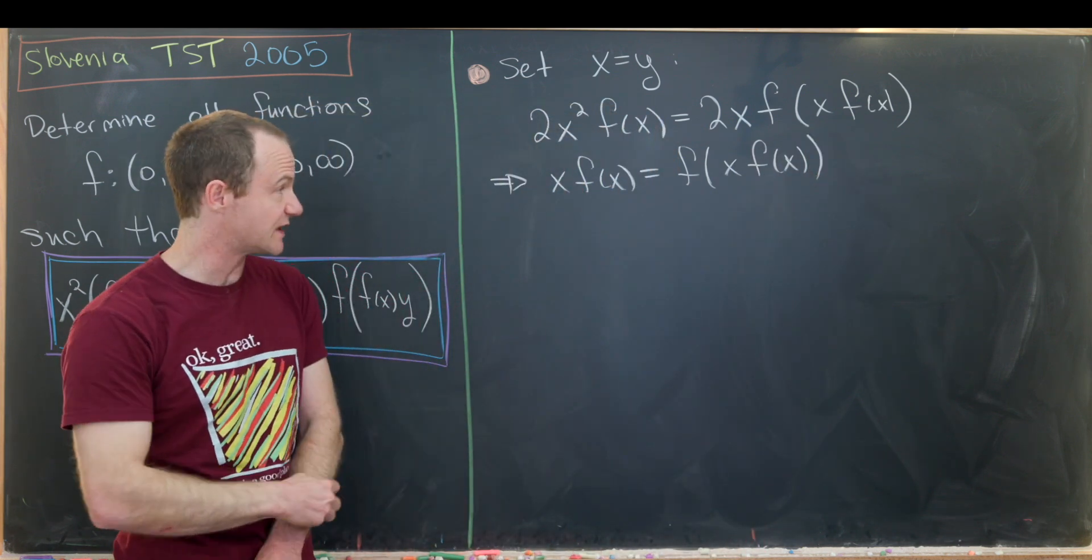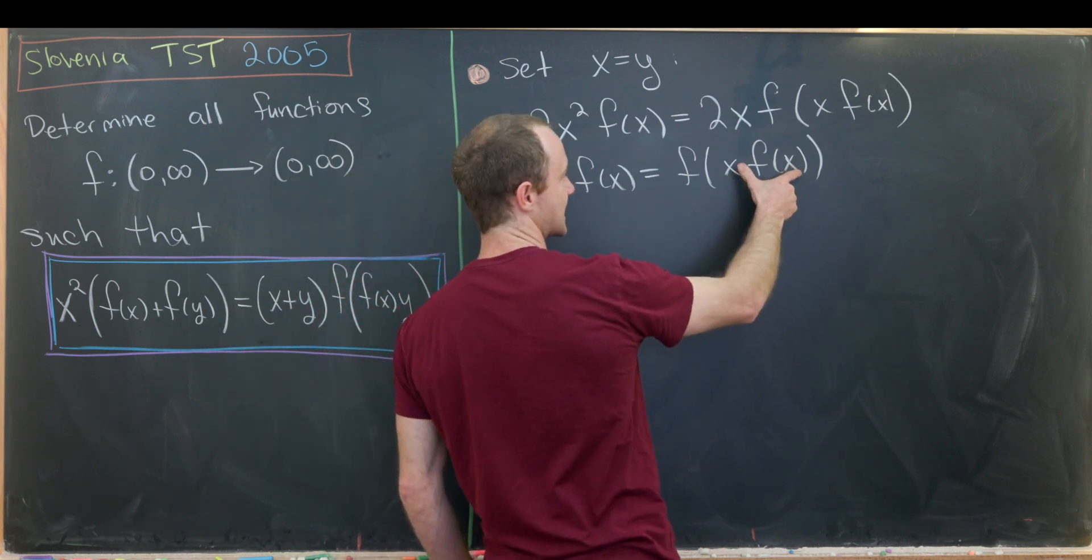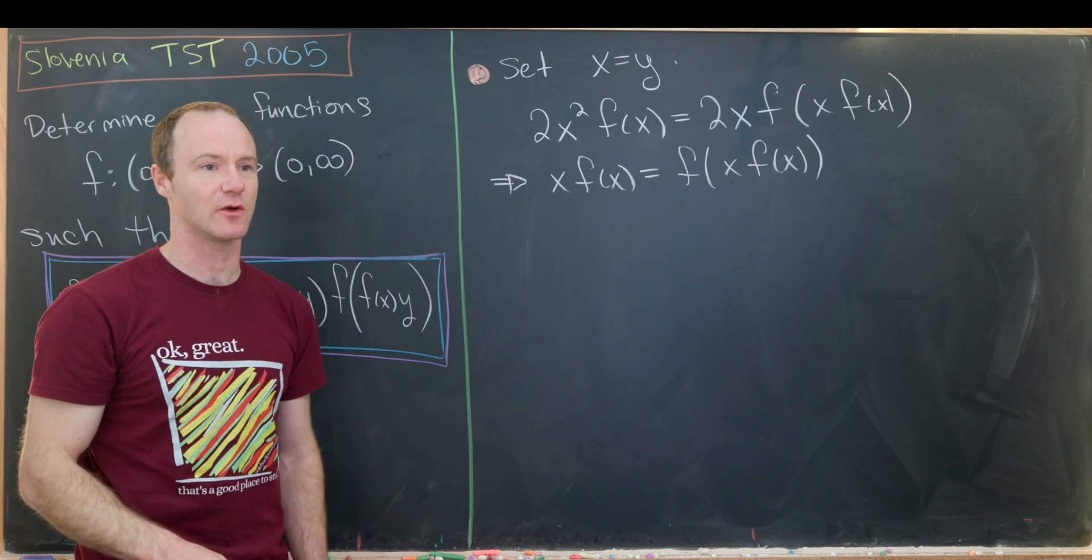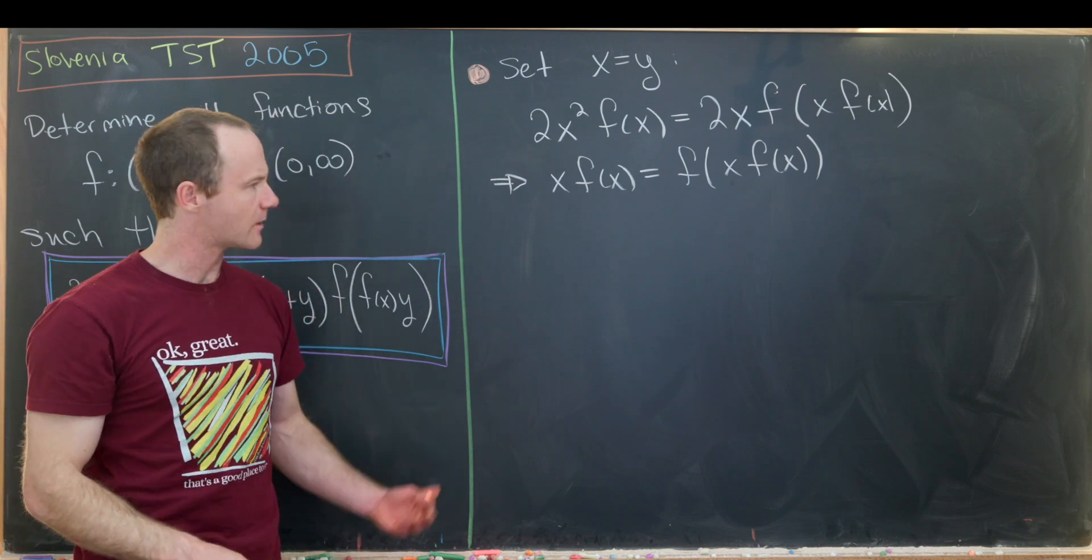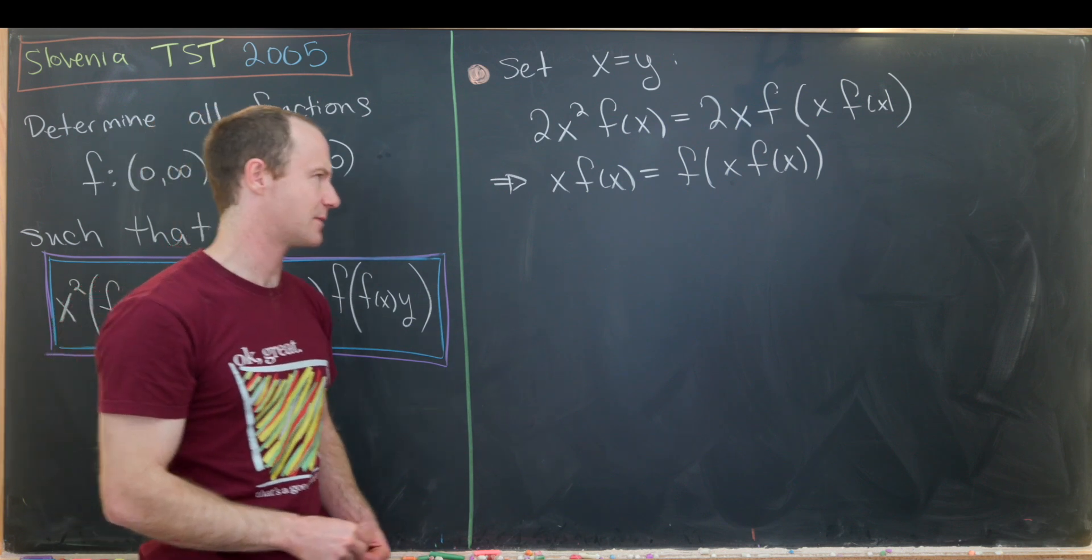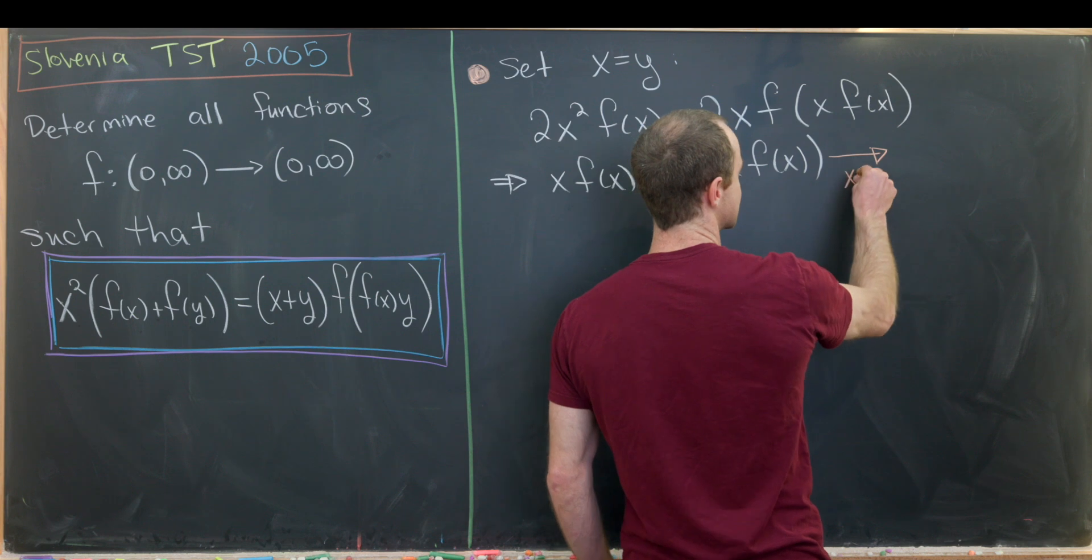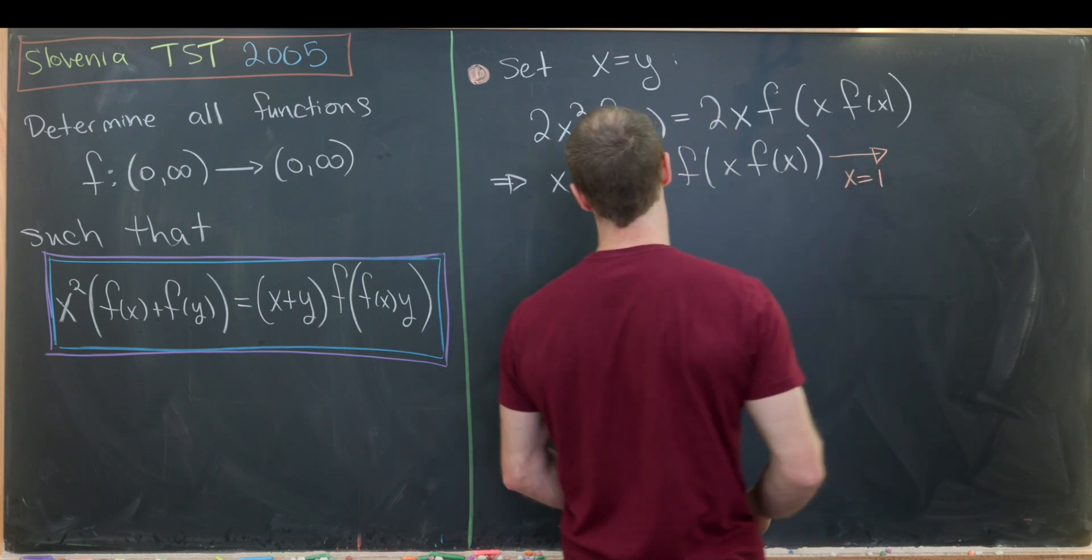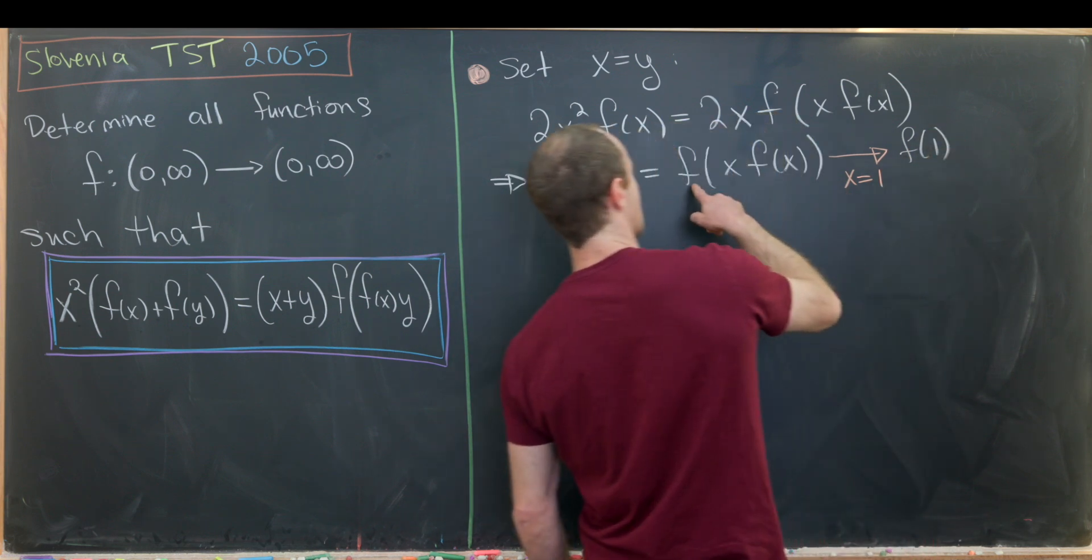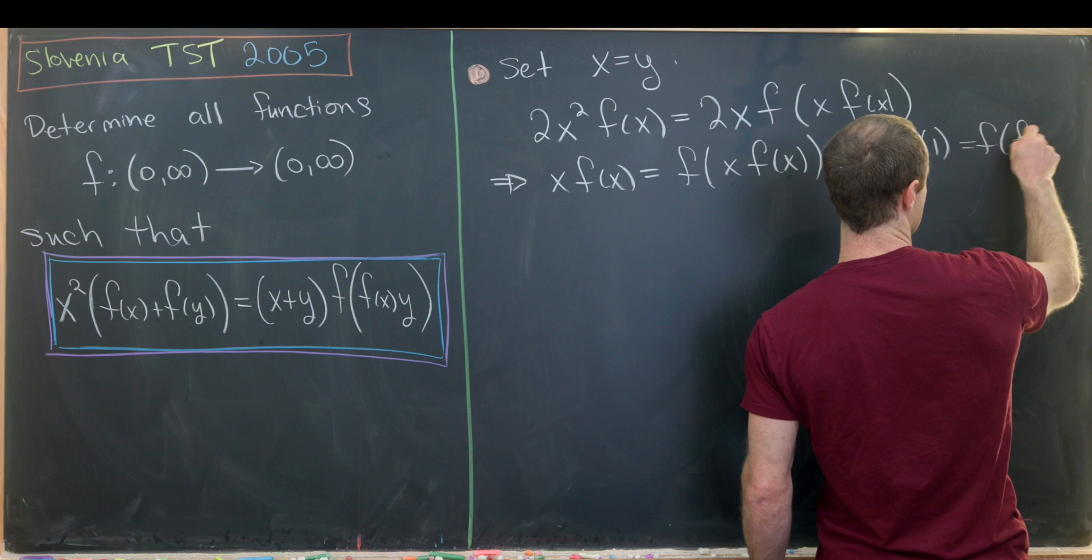So I think that's pretty interesting. It says that whenever we plug in something like xf(x) into the function, we get something like xf(x) out the other end. Now I'll take maybe a special value of x to see what happens. Maybe I'll take x equals one because that's the simplest. So let's set x equal to one, and that gives us an f(1) on this side of the equation, and that gives us f evaluated at f(1) on the other side of the equation.